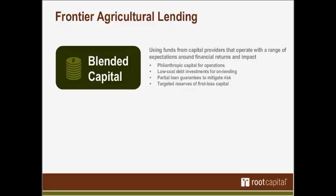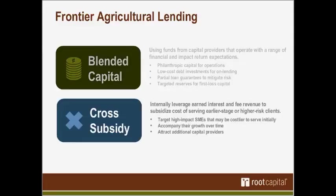The second way we address the high cost of frontier lending is through an internal cross-subsidization model, in which a portion of profitable loans generate enough revenue to cover the cost of financing earlier-stage or higher-risk businesses that are typically costlier to serve. For example, we recently made a $50,000 working capital loan to an early-stage business in Uganda. The revenue from that loan only covers a portion of the costs we incur in underwriting it, but that company has the potential to grow and may in the future become a business that is profitable for us and subsidizes other early-stage businesses.